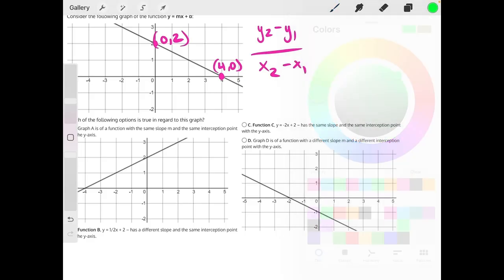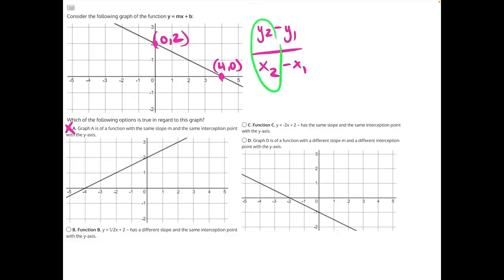For my y2 and x2, I will select this set of coordinate points, and for my y1 and x1, I'll choose the other pair of coordinates. The numerator, 2 minus 0, will give us 2. And the denominator, 0 minus 4, will give us negative 4.